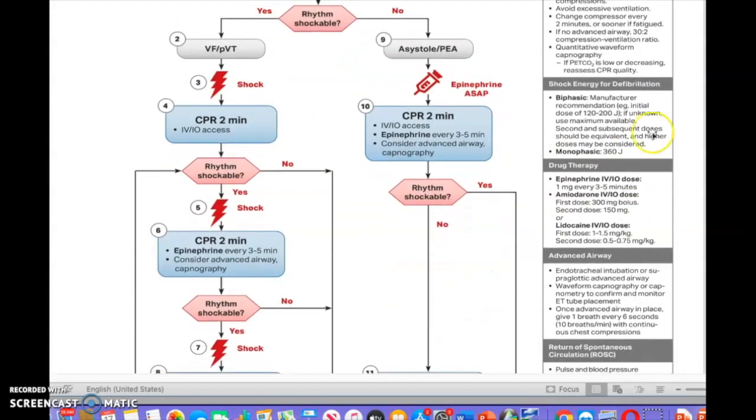We talked about asystole and PEA. We talked about epinephrine. You administer epinephrine through an IV or an IO access, one milligram every three to five minutes. Then the next drug that we should be administering is amiodarone. We know amiodarone, the first dose is 300 milligrams bolus, and then the second dose is 150 milligrams.